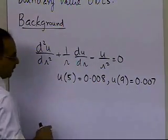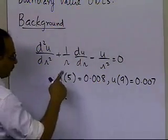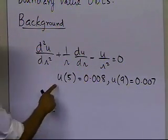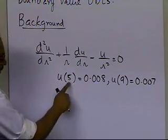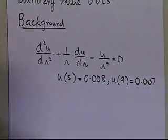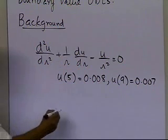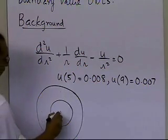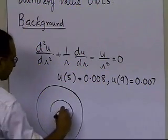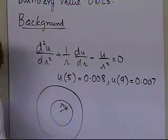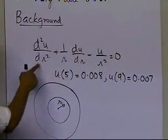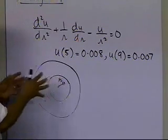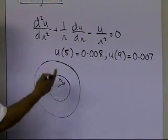To solve this differential equation, we are looking to find the value of u between r=5 and r=9. This is actually a differential equation which governs a thick pressure vessel. The radial displacement — how much it is radially expanding or contracting when you apply pressure inside — is given by this ordinary differential equation.